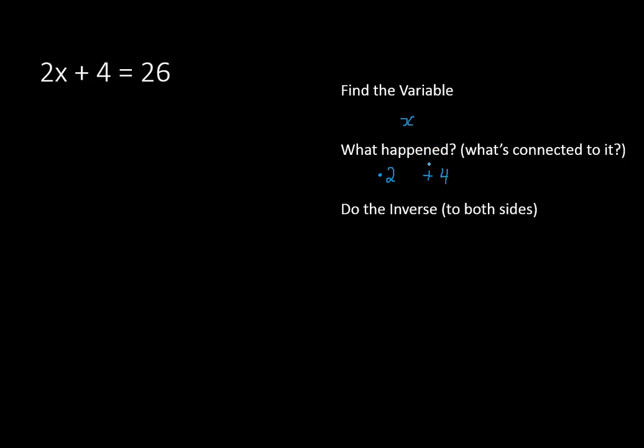We're doing multiplication and addition. We're doing order of operations backwards, so we'll take care of the addition first by subtracting 4 from both sides. Or in other words, we're peeling off the layer that's farthest away from the x. Let's subtract 4 from both sides of that equation, leaves us with 2x is equal to 22.